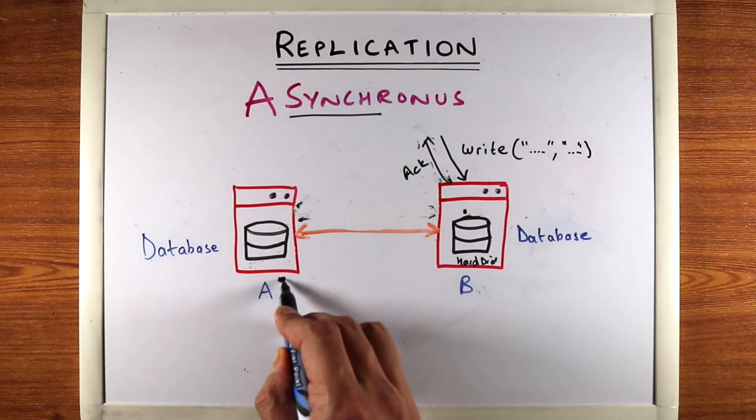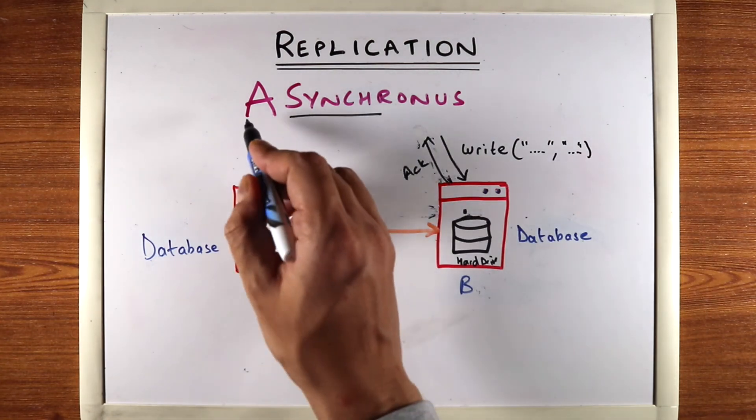Eventually, database A will receive the write. This is why it's called asynchronous replication.